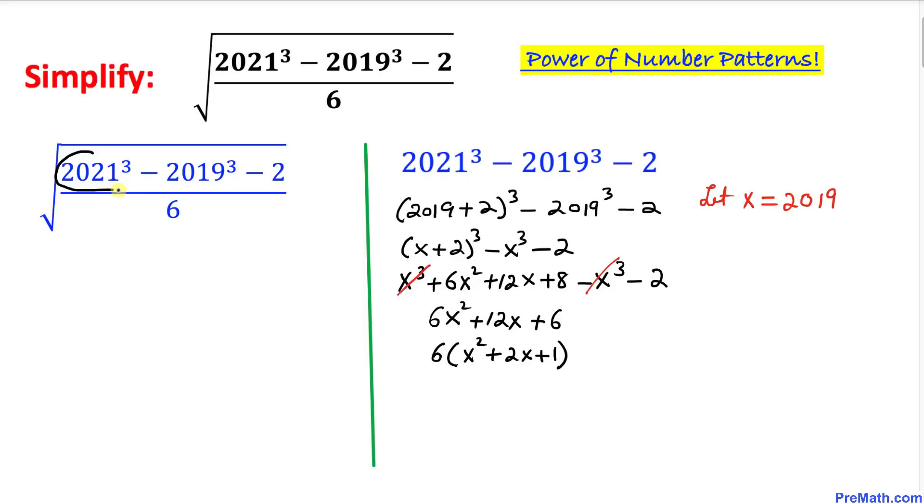Therefore this numerator part in the radicand could be replaced by this. So that means we can write this one as the square root of 6 times (x² + 2x + 1) divided by 6. As we can see, this 6 and 6 cancel out, so this could be easily written as the square root of x² plus 2x plus 1.